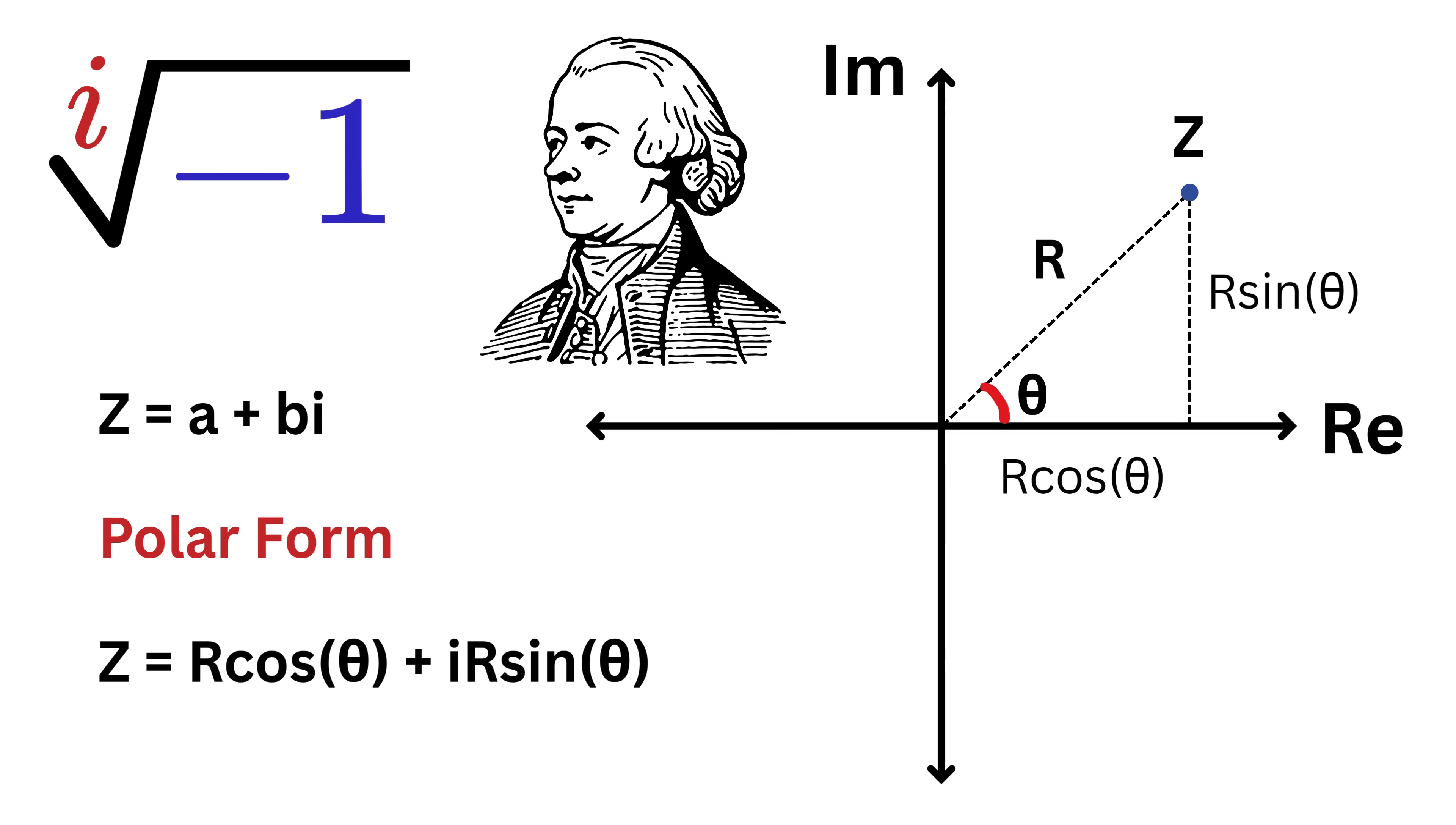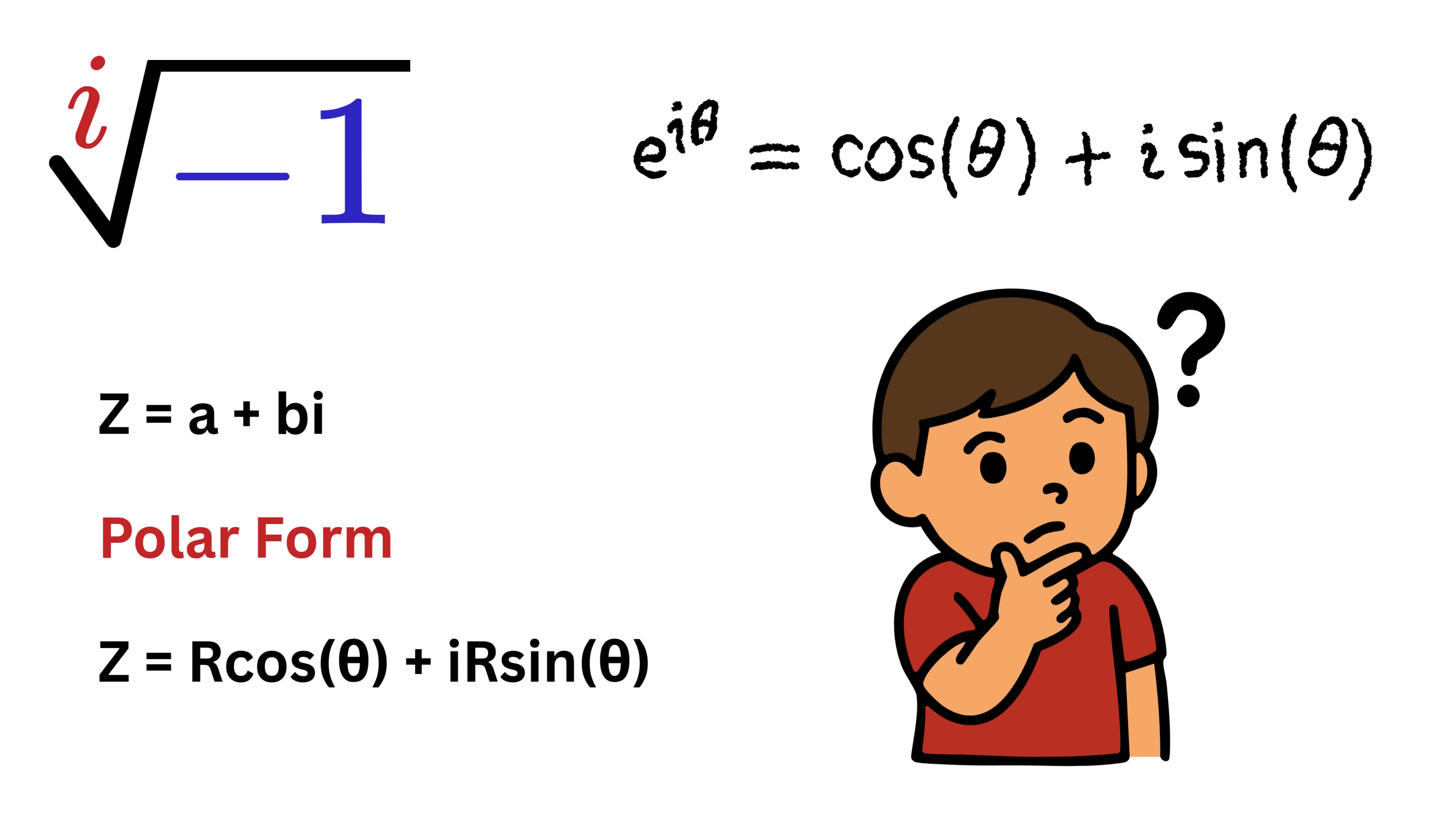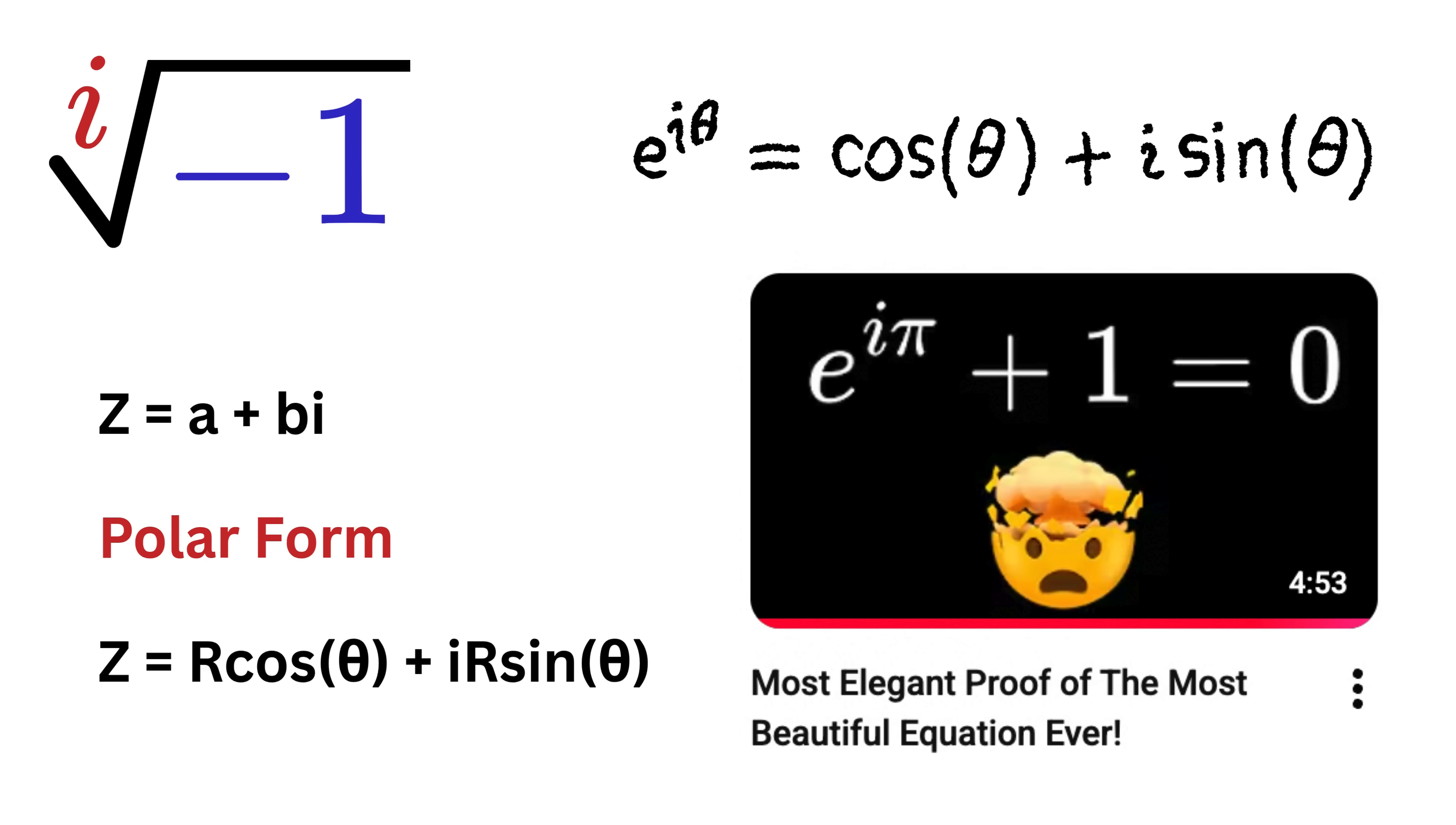Then came a genius mathematician named Euler, who discovered an extraordinary connection between exponential and trigonometric functions, and he showed that a constant number e raised to the power of i theta is exactly equal to cos theta plus i sin theta. If you want to know how he obtained this relationship, I have made a video on the same, and the link is in the description.